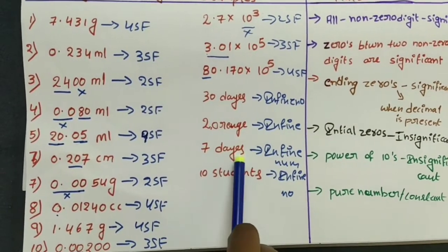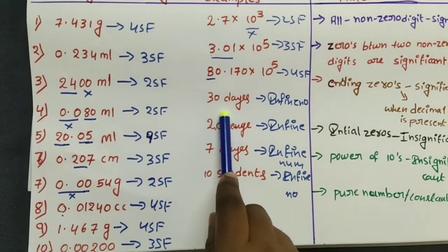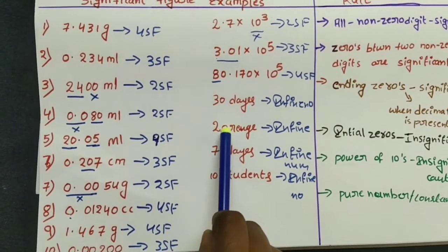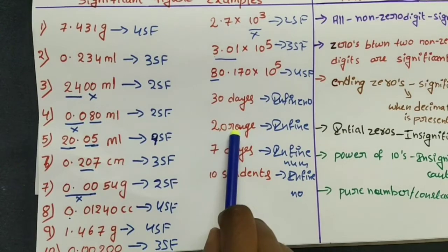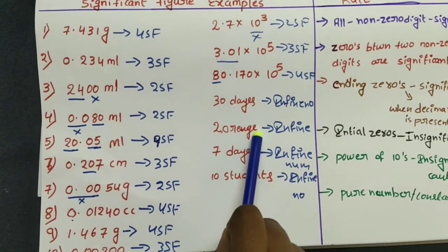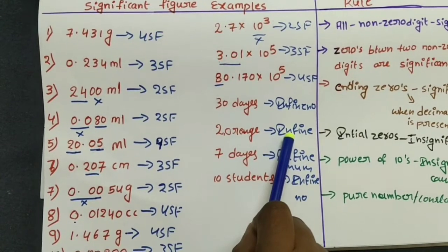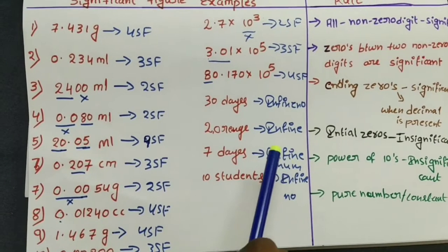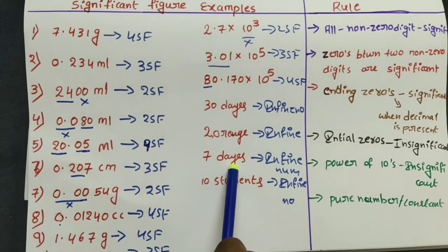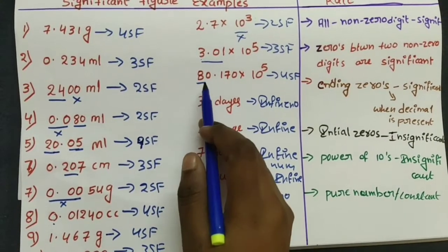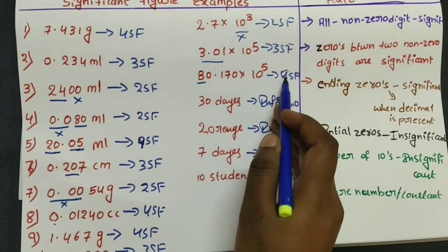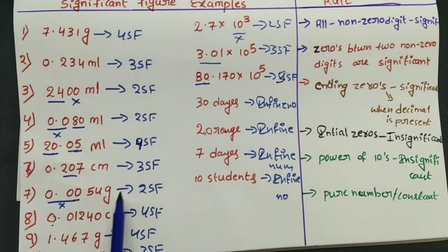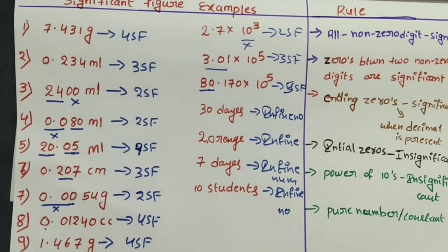You can use counting objects. If you have 30 days, you can use the infinite number. If you have 10 students, you can use the infinite number. If you have 5 significant figures, you can use the infinite number. Do you understand? Thank you.